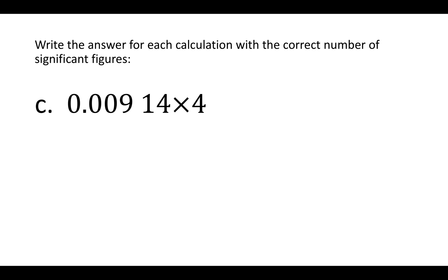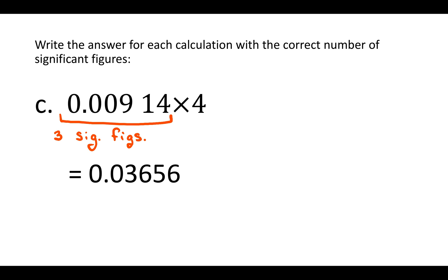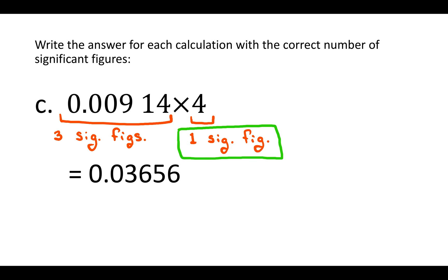First, just do the multiplication — plug it into a calculator. You should get 0.03656. Now go back to the two numbers you multiplied or divided together. This first number only has three significant figures — those zeros are not significant, because zeros to the left of non-zero numbers are never significant. Our other number has only one significant figure. So the less precise measurement has one significant figure, and that's as precise as our answer can be.